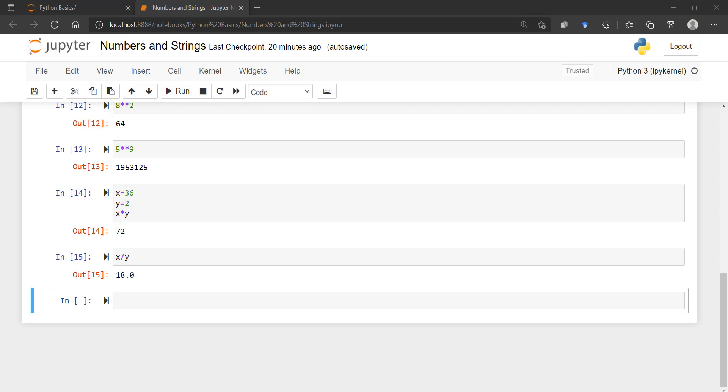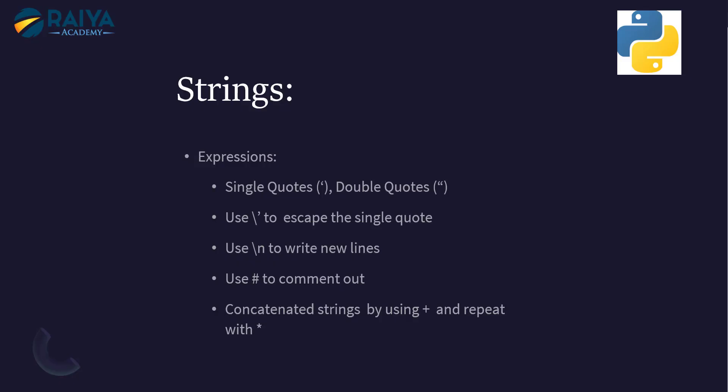Besides numbers, Python can also use strings, which can be expressed in several ways. You can use single quotes or double quotes. We'll also look at how to write new lines, how to comment stuff out, and how to concatenate different strings. Let's get started on that.